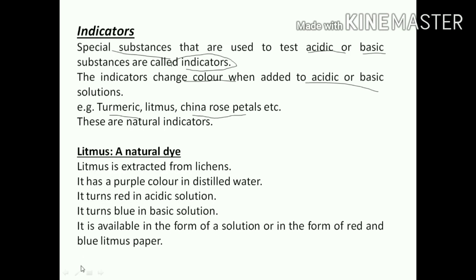When the litmus paper is dipped in acidic solution, it will give red color. Then it turns blue - means litmus turns blue when it is dipped in basic solution. It is available in the form of solution, or in the form of red and blue litmus paper. Both types of paper are there - red litmus paper and blue litmus paper. By that we can find out which one is acid and which one is base.